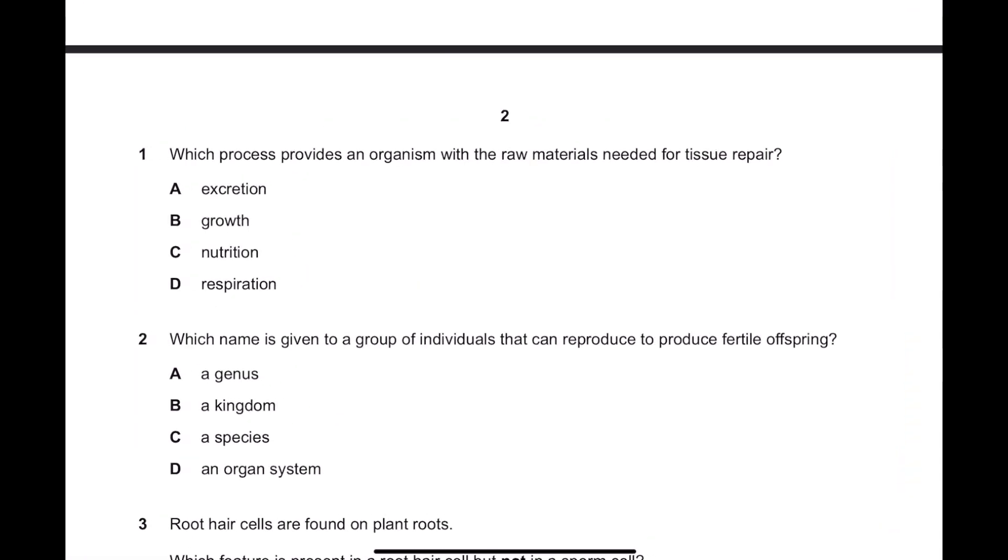Which process provides an organism with the raw materials needed for tissue repair? So it says providing the organism with raw materials and needed for tissue repair.